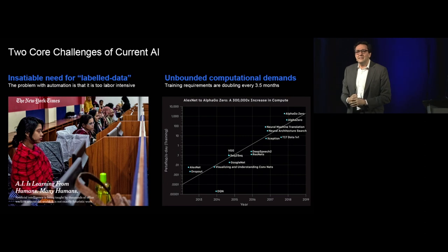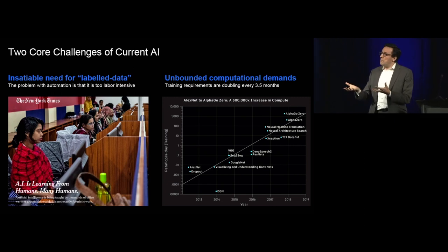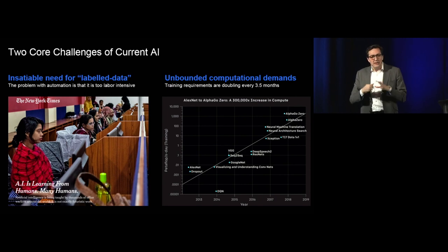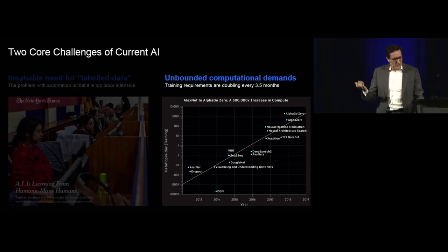But I want to tackle the second part, which is the unbounded computational demands. Jeff also showed this chart. I want to elaborate on the right-hand side about the rate of demand in terms of computational power to train. This was the analysis done by OpenAI. Just remember this idea: the computational demand is doubling every three and a half months.